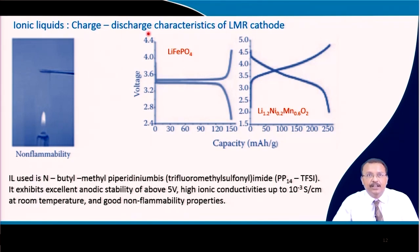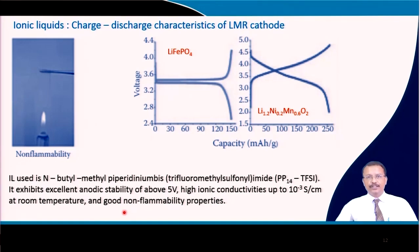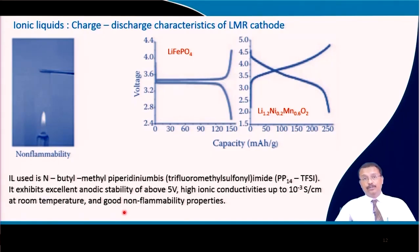This is the typical charge-discharge characteristics of an LMR (lithium manganese rich) cathode operating at high voltage compared to lithium iron phosphate. An ionic liquid such as N-butylmethylpyrrolidinium bis(trifluoromethanesulfonyl)imide (PP14-TFSI) exhibits excellent anodic stability of about 5 V, high conductivity up to 10⁻³ S/cm at room temperature, and good non-flammable properties. Various combinations are being developed.